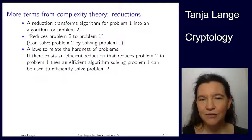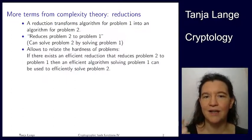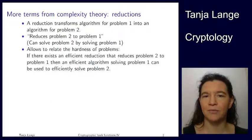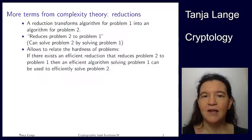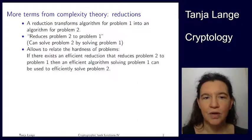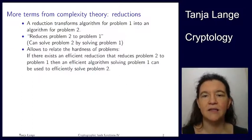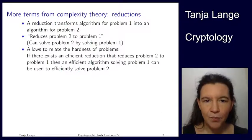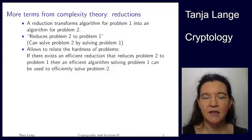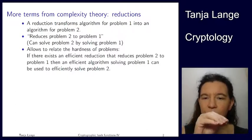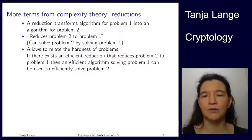A reduction takes an algorithm for one problem and turns it into an algorithm for another problem. So if we have two problems — problem one and problem two — and we have an algorithm for problem one, then with a reduction we can turn it into an algorithm for problem two. In that case, we say it reduces problem two to problem one: it takes the thing we're now solving and reduces it to the one we knew how to solve before.